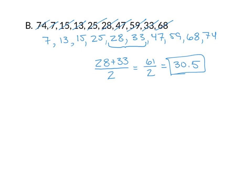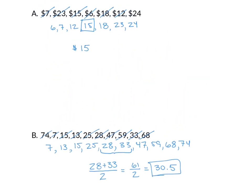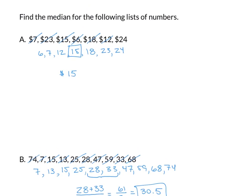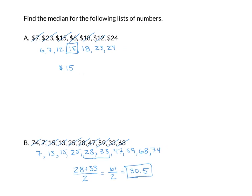One of the downfalls to average is what happens if we have extreme numbers — a really small number or a really large number. Median gets rid of the extreme values and focuses more on the numbers that are closer together. For instance, 7 in example B would have a large effect on the average, but in terms of the median, it does not.